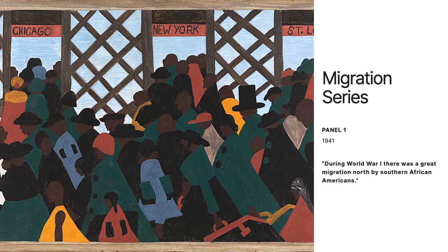The Migration Series, created in 1941, is one of Lawrence's best known works. Although it consists of multiple paintings, he actually saw them as one collective piece, so he worked on all 60 panels at the same time. The overarching theme of these works is the migration of Black families from the south that started at the beginning of the 20th century.